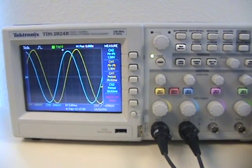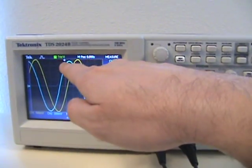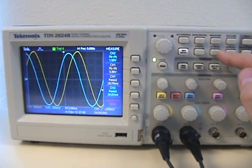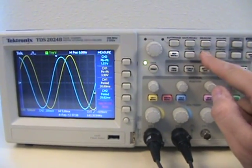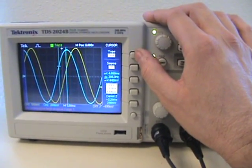So now what we're trying to do is figure out the phase shift, which is the difference between the time of the two peaks. So we can go to our cursor button. And what we want is our cursor. We want time.